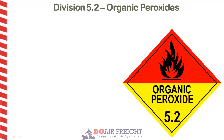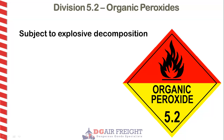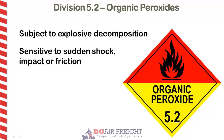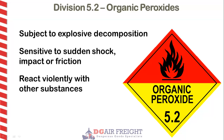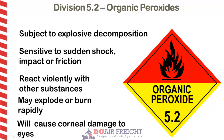Division 5.2 are also strong oxidizers, but many are thermally unstable, some even at normal temperature. These substances are subject to explosive decomposition. They are sensitive to sudden shock, impact, or friction. They can react violently with other substances. They may explode or burn rapidly, and can attack the skin and eyes, capable of causing corneal damage.